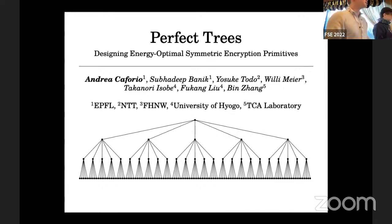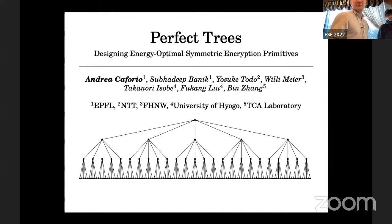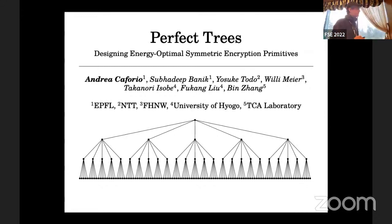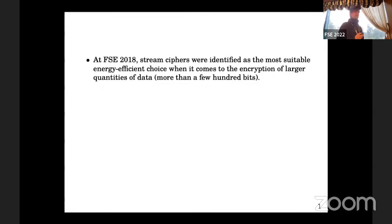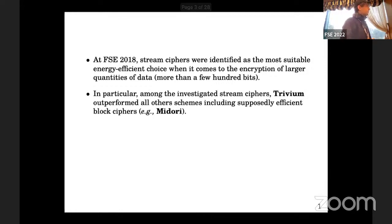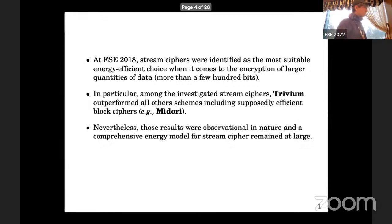This work is entitled 'Perfect Trees: Designing Energy-Optimal Symmetric Encryption Primitives', by Andrea Caforio, Subadip Bannick, Yosuke Todo, Willie Meyer, Takanori Isobe, Fukang Liu, and Bin Zhang. There is a famous result at FSE 2018 that identified stream ciphers as the most suitable choice for energy-efficient encryption for larger quantities of data. Among all investigated stream ciphers, Trivium really outperformed all other schemes, including supposedly efficient block ciphers like Midori. However, those results were rather observational and a comprehensive energy model for stream ciphers remained at large.